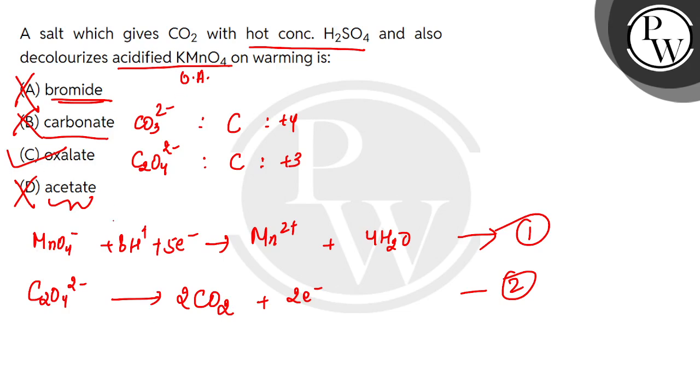Therefore, the salt which gives CO2 with hot concentrated H2SO4 also decolorizes KMnO4. Why is it decolorizing? Because it is reducing the purple color of acidified KMnO4. So option C is correct. I hope you understood. Thank you.